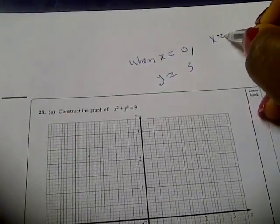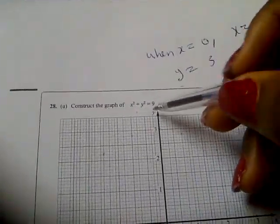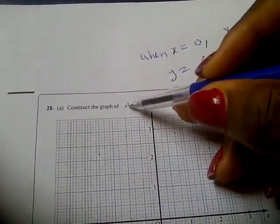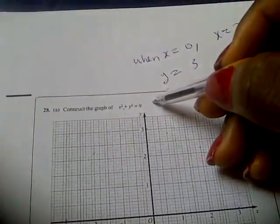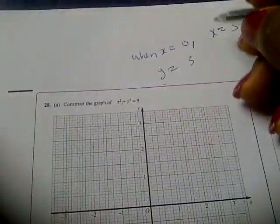When x is 3, what would y be? If x is 3, 3 squared is 9, 9 minus 9 is 0, y would be root of 0 and that's 0.